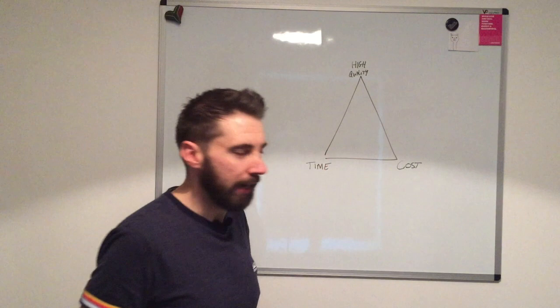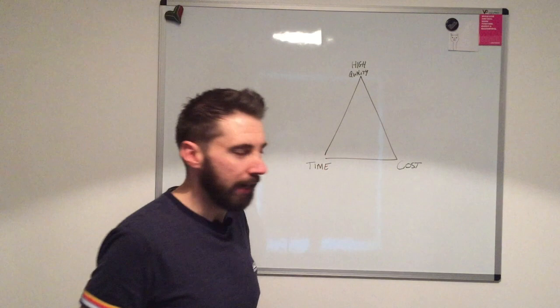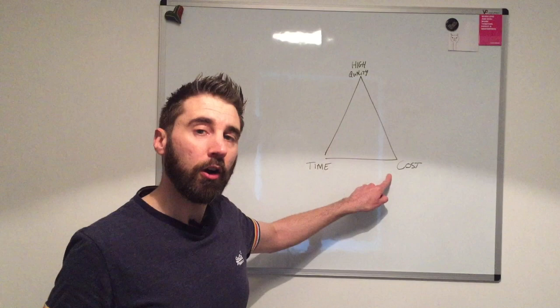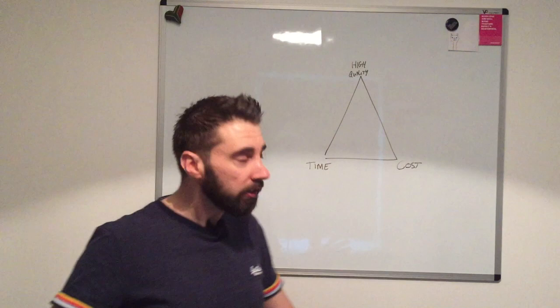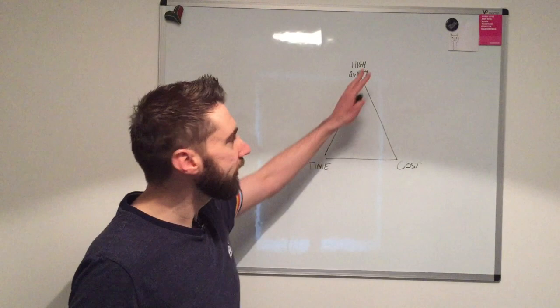Now obviously in an ideal world what everybody wants is something that's high quality, low cost, and delivered quickly. But as we know, that hardly ever happens if ever. It's one of those impossible things that it's very difficult to achieve. So we need to pick just two of these three constraints.